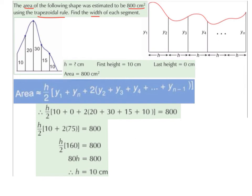Simplifying: 20 plus 30 plus 15 plus 10 is 75. 10 plus 0 is 10. 2 multiplied by 75 is 150, plus 10 is 160. So we have h over 2 multiplied by 160 equals 800. h over 2 is the same as a half h, and a half of 160 is 80, so we get 80h equals 800. Therefore h equals 800 divided by 80, so h equals 10. The width of each segment is 10 centimetres.